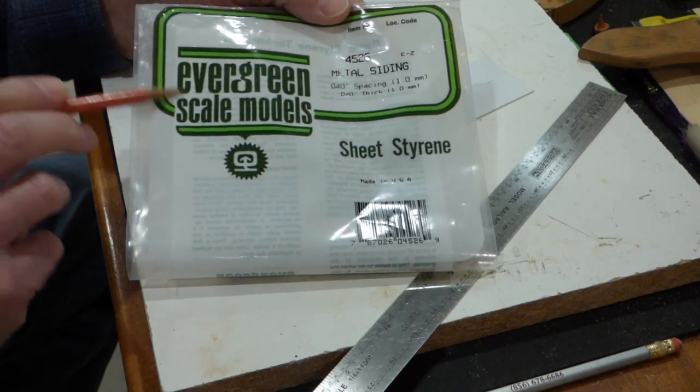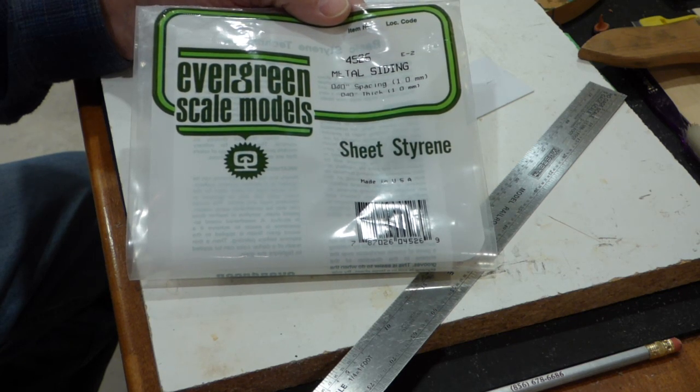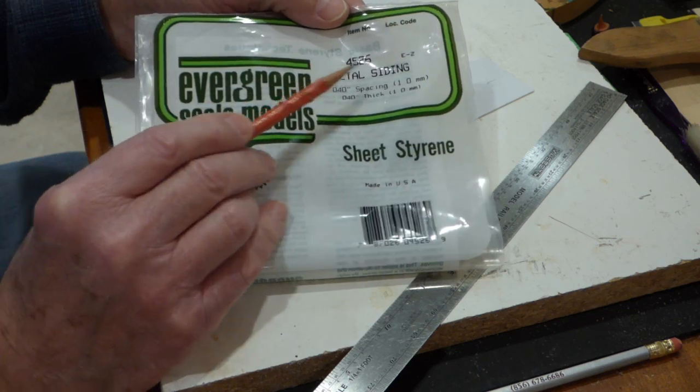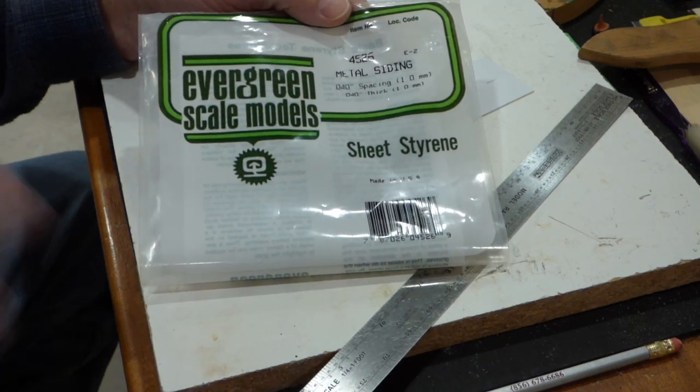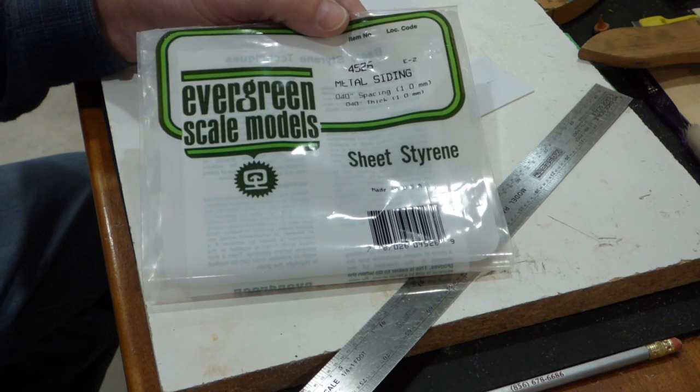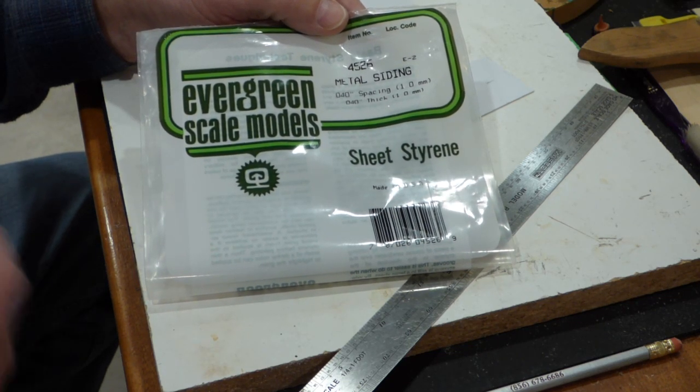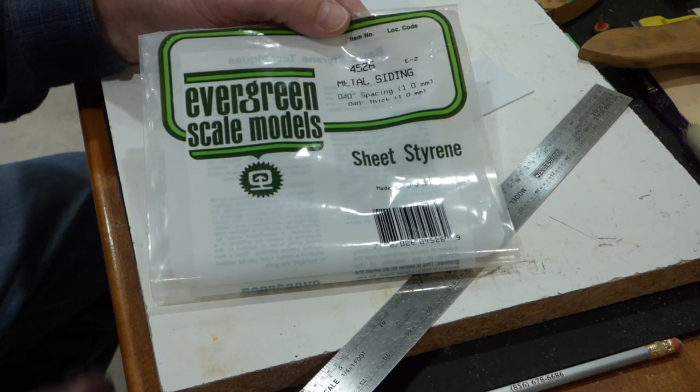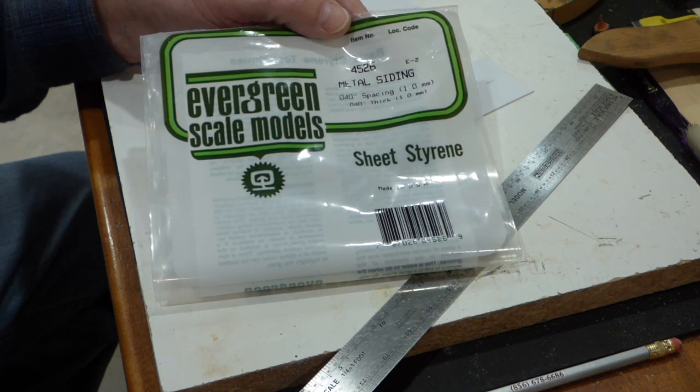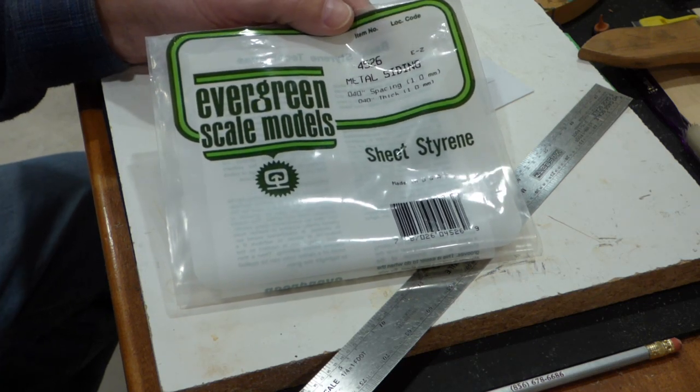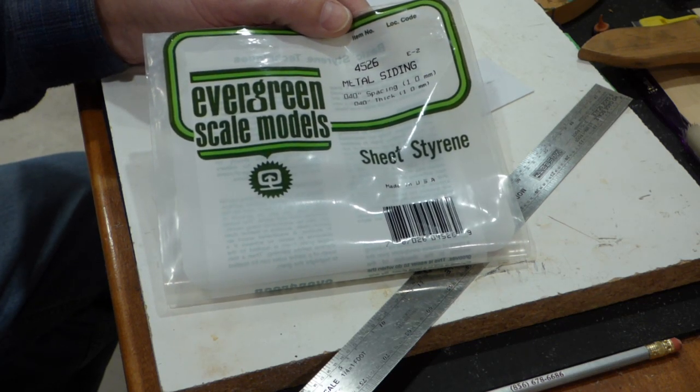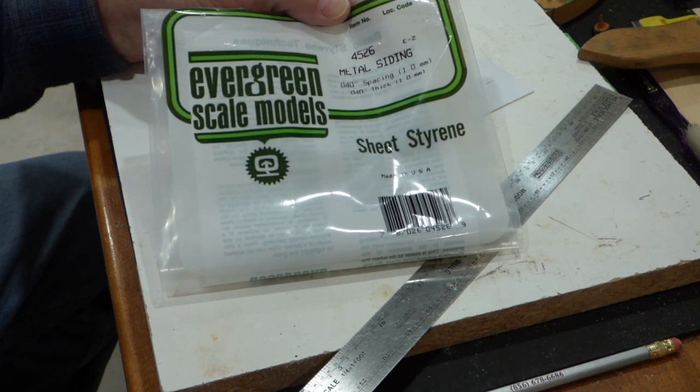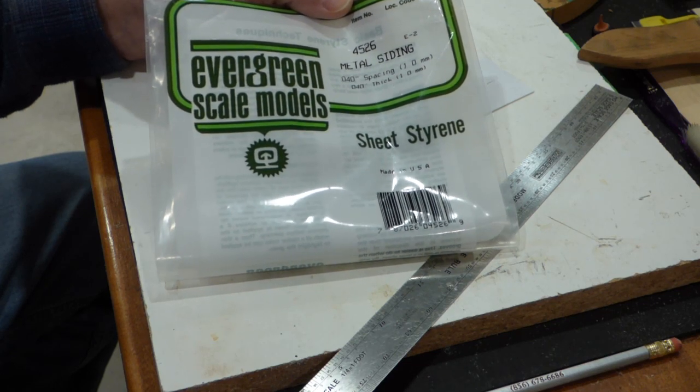I'm using Evergreen sheet styrene, number 4526 metal siding. They have a variety of metal sidings both in terms of thickness of the sheet - this is 0.040 thick - and in the spacing of the corrugations, and this is 0.040 spacing as well, to simulate corrugated metal roofing or siding on a building.